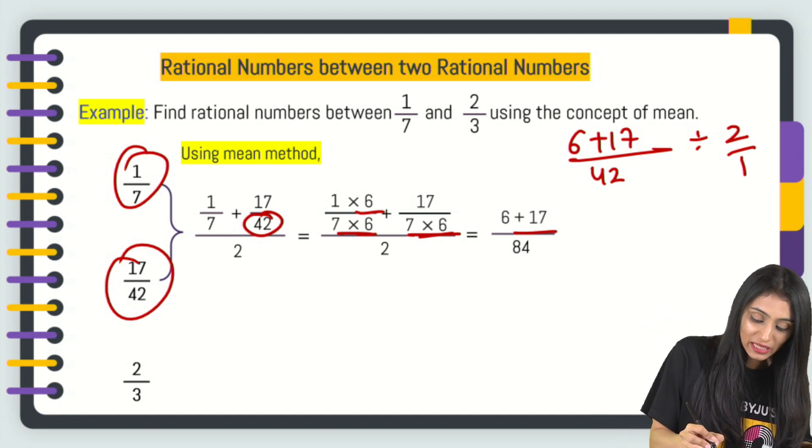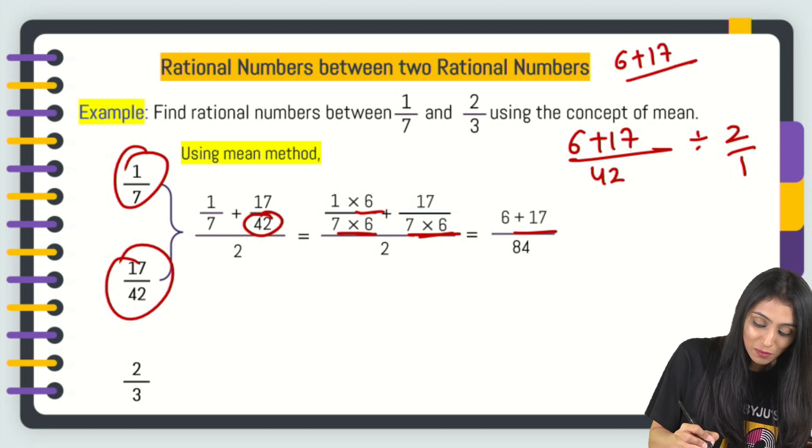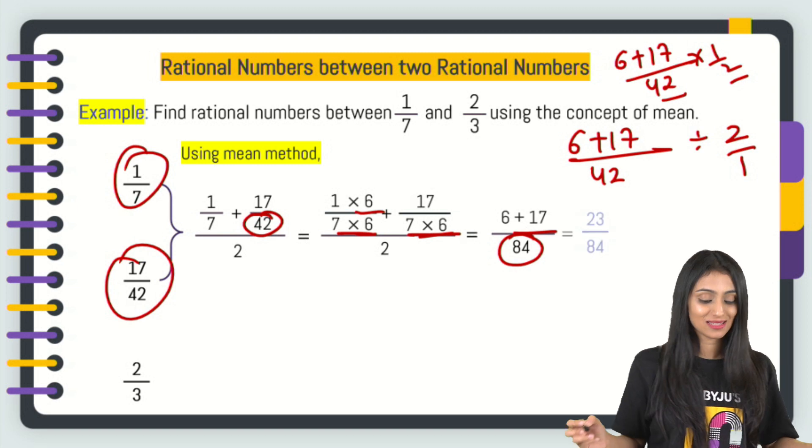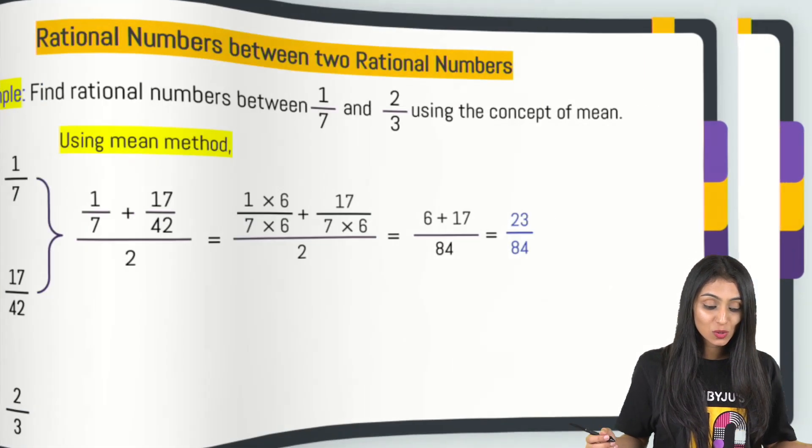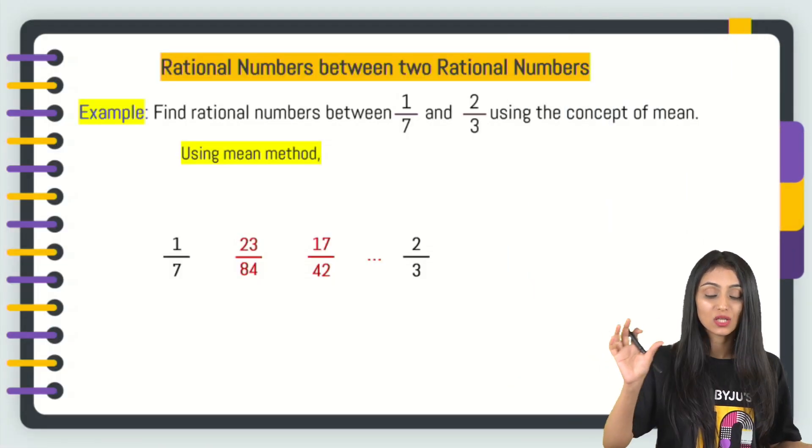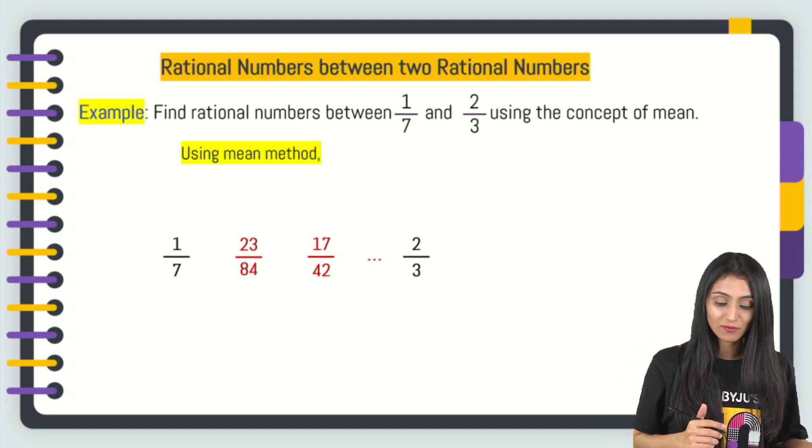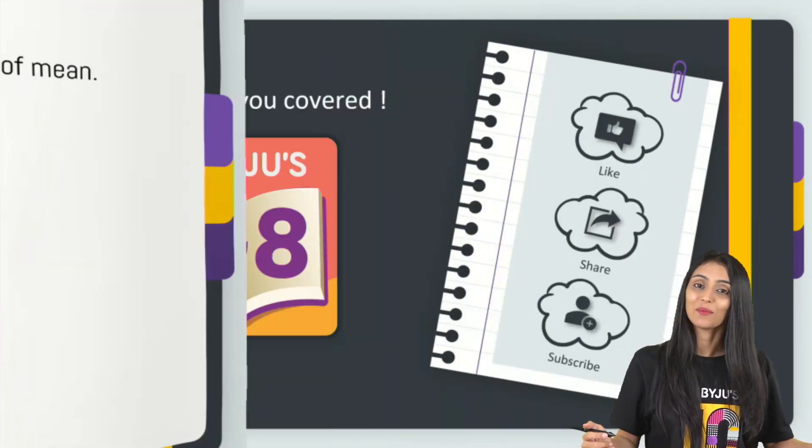this division symbol to multiplication, you get what? 6 plus 17 by 42 into 1 by 2. 42 times 2 is nothing but 84. That's how we are getting this. So, 23 by 84 is going to lie between 17 by 42 and 1 by 7. These are the rational numbers that we have.